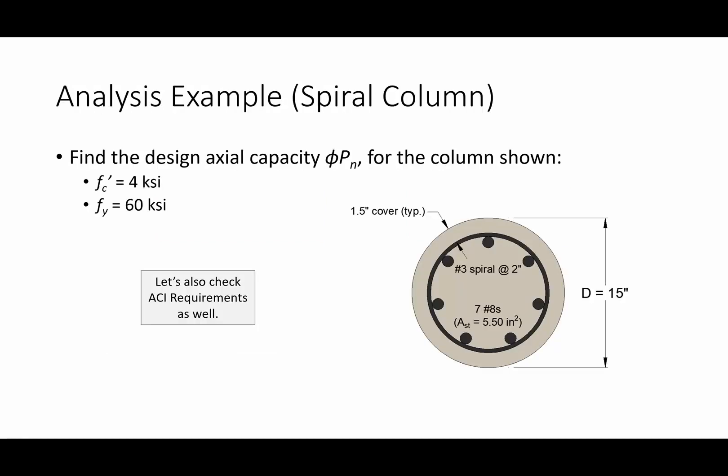Now I want to show you how straightforward this is. We're going to find the capacity of this column: a 15-inch diameter column with one and a half inches of cover, number three spirals at two-inch pitch, and seven number eight bars for longitudinal reinforcement. The area of the steel is 5.5 square inches. We've got 4 KSI concrete and 60 KSI steel, and we'll also check the spiral reinforcement ratio.